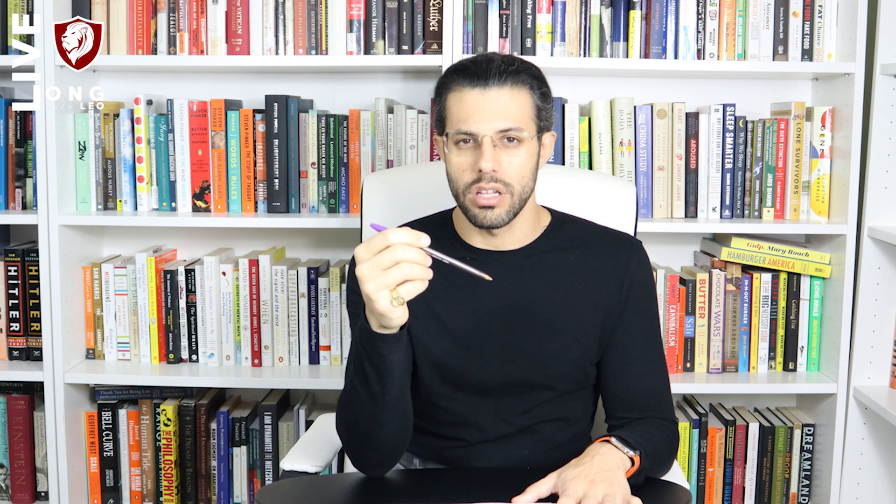Amphetamines are neurotoxic to the serotonergic axons — the axons that come from the raphe nuclei spreading serotonin across the brain. At high doses, amphetamines are neurotoxic to those axons. There is a blood pressure medication called rilmenidine that has been shown to protect serotonergic neurons from death.